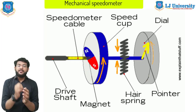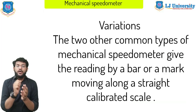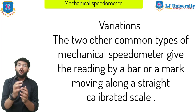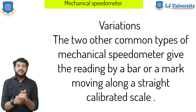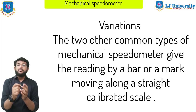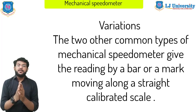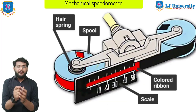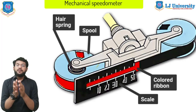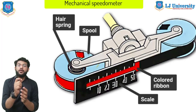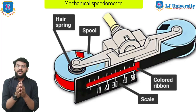At a certain point the force of the spring and the magnetic force balance out, and the needle steadies to give the reading. There are also other common types of mechanical speedometers. Two variations give the reading by a bar or a mark moving along a straight calibrated scale. Both are roughly similar in operation to the round dial type — a cable driven by the gearbox output shaft turns a magnet which causes an indicator to move against the force of a restraining hair spring. In one type, the indicator consists of a moving ribbon attached to each end of a spool. The magnet causes the ribbon to reel off one spool to another against the force of the hair spring, and as the ribbon moves a mark on it lines up with the calibrated scale to give the reading.